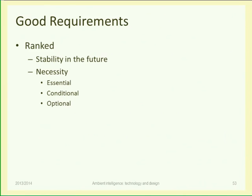Good requirements are ranked. If I have a list of 100 requirements, I should be able very quickly to point out number one, two, and three in importance. What is the feature number one of my system? Feature number 97 may be left out from the system if needed. Always think of it as incremental development. A system starts empty with zero functional requirements satisfied, and then you work toward the first one, then the second, the third, and so on.